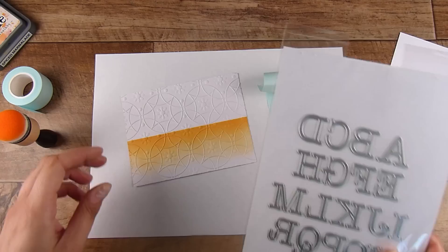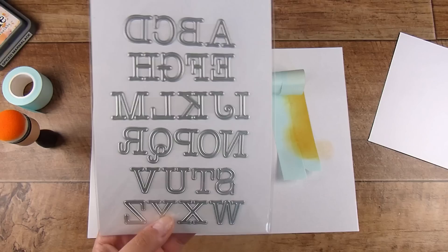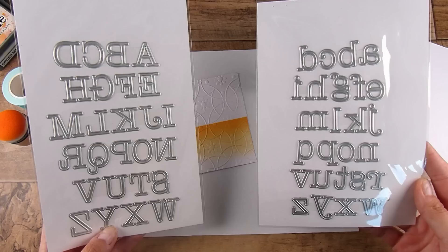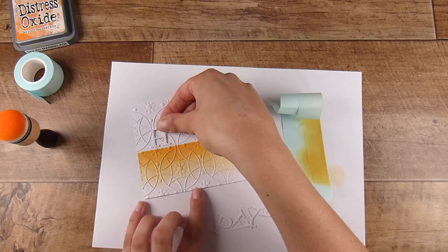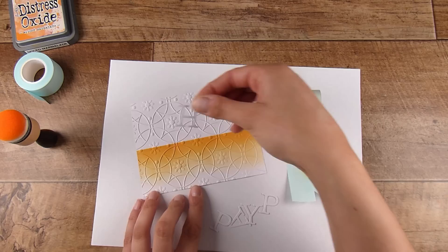I'm going to use some alphabet dies. I'll be the first to say that alphabet dies can be pretty pricey. These are from scrapbook.com and that is their brand. They have great sales on their brand products and usually always have one if not two freebies that you can add to your cart for free.